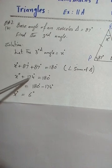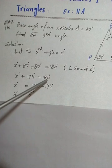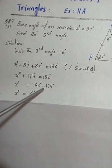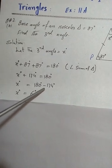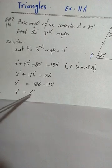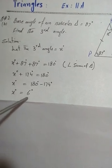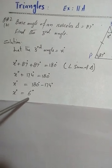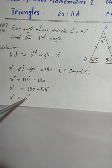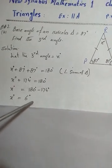When you shift 174 degrees to the right-hand side, it will have a negative sign. So their difference gives x is equal to 6 degrees. This is the third angle of an isosceles triangle when its base angles are given.